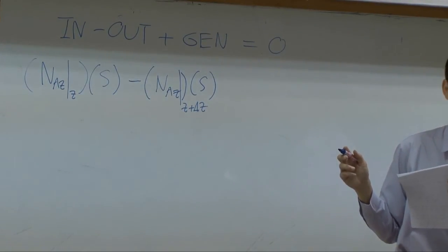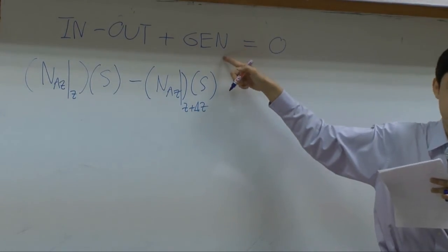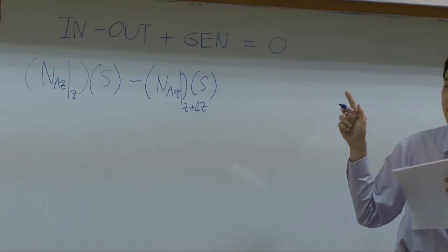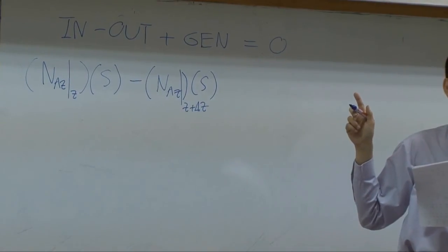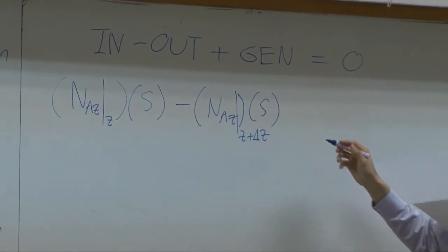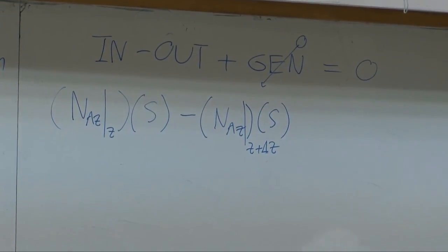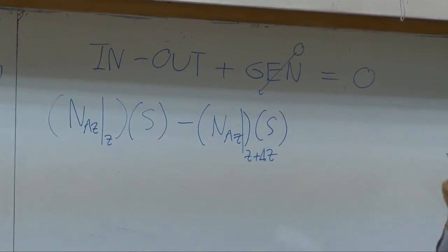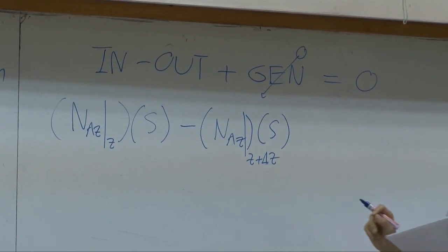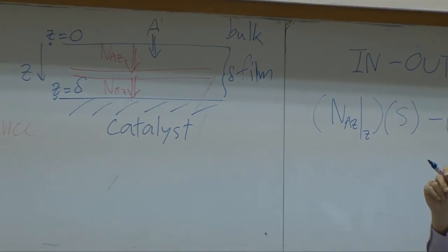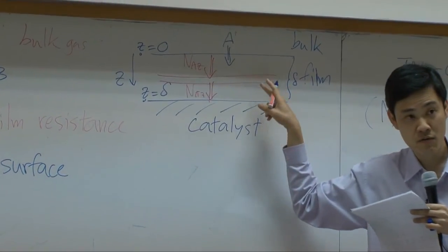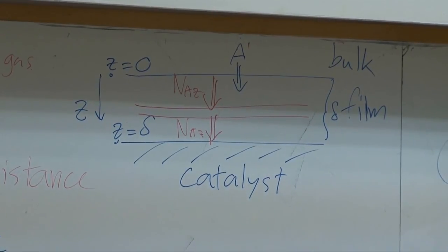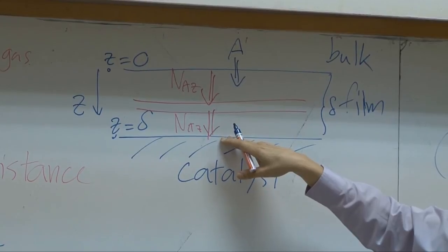Is there any generation? Is this term zero? No. Why? Because there is a reaction. Right? Are you agree? This term indeed is zero. Why? When you want to determine whether or not generation term is zero, you need to be very careful and look where we take the balance. Right now, we're taking a balance around the shell. Is there any reaction within the shell? No, because right now, reaction takes place on the surface only.